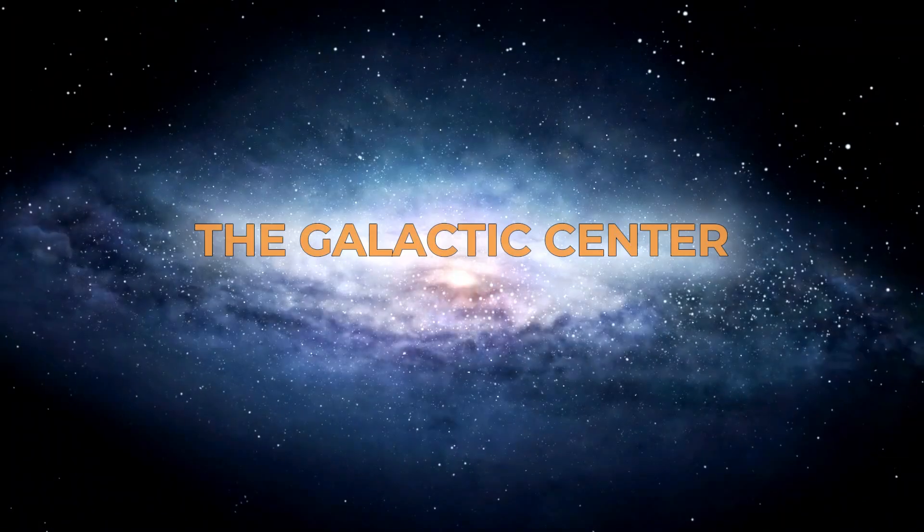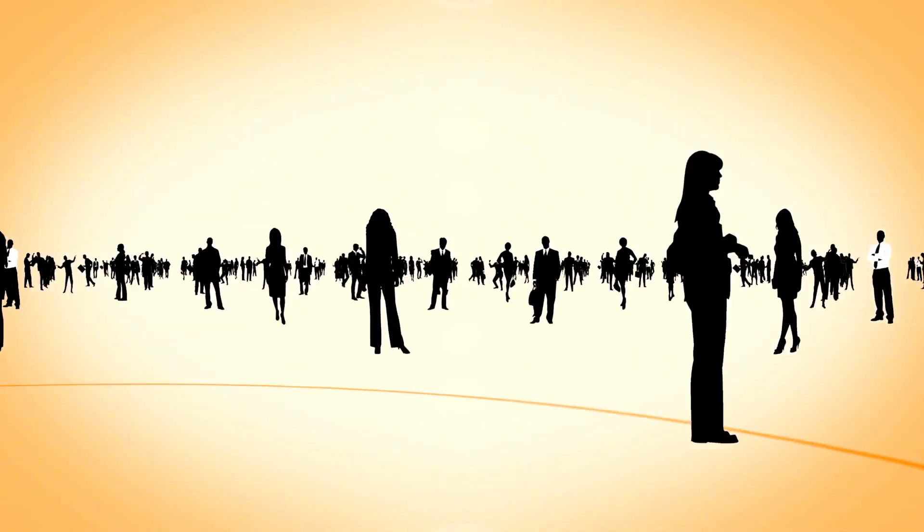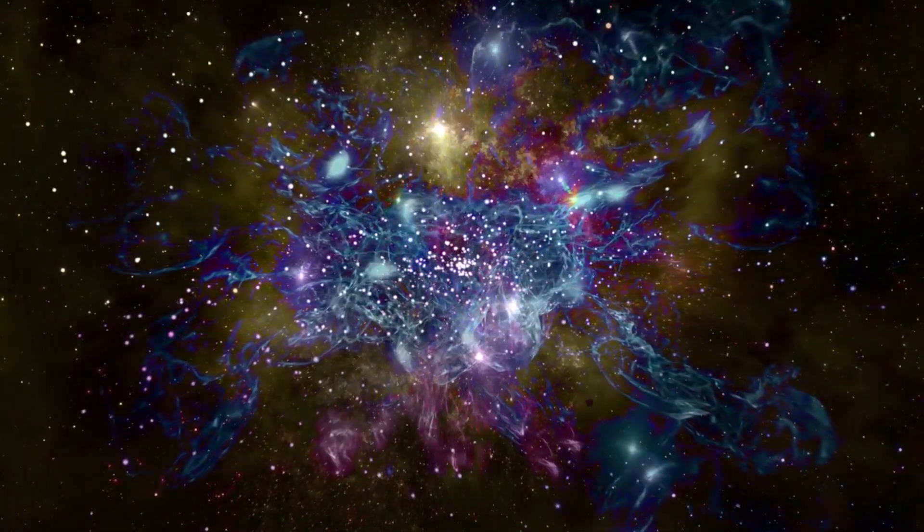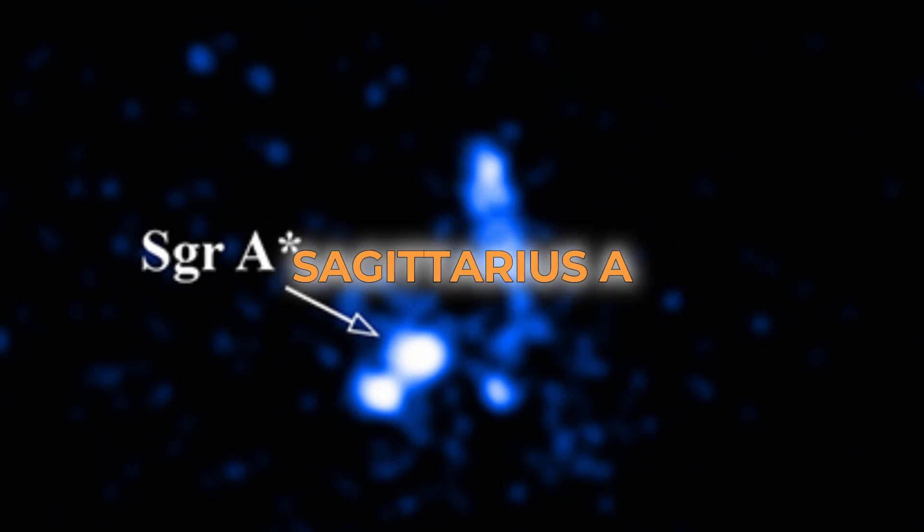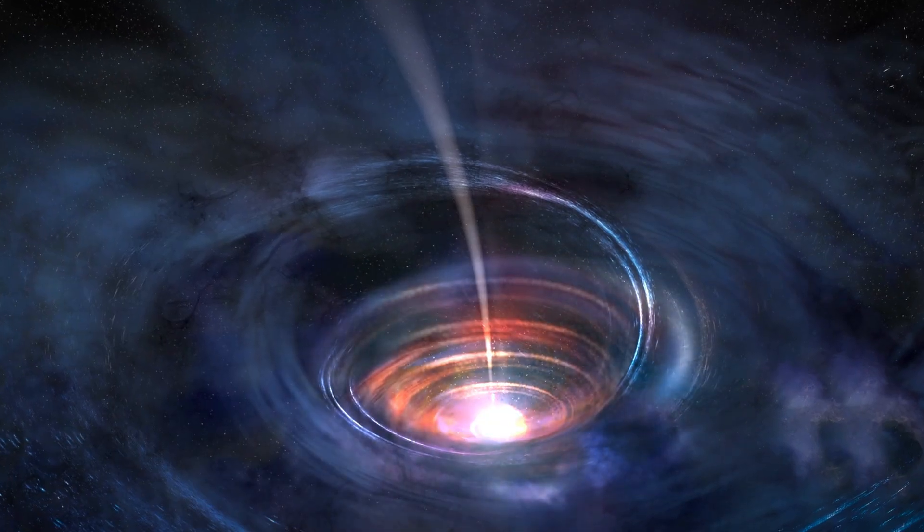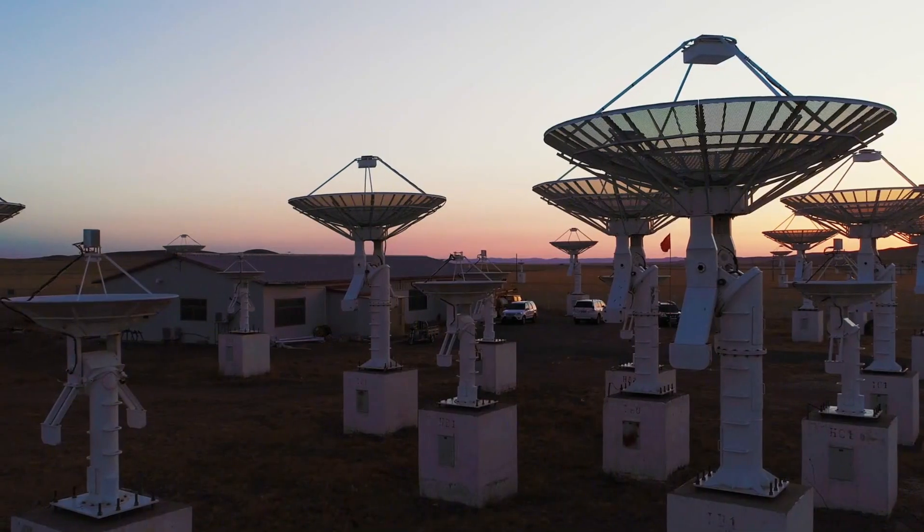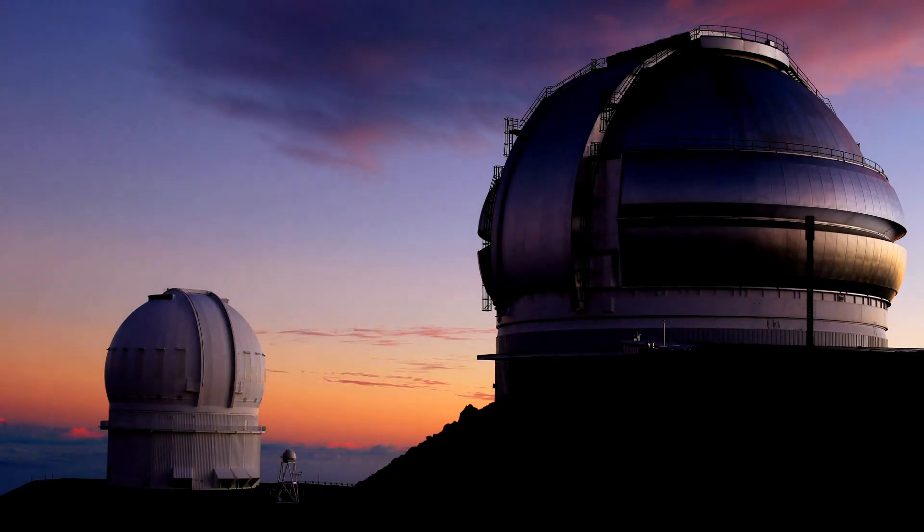The galactic center. Imagine standing amidst the bustling activity of a city square multiplied by billions. Welcome to the heart of our Milky Way galaxy. Here lies Sagittarius A, a supermassive black hole weighing as much as 4 million suns. Beyond theory, astronomers meticulously study it using NASA's advanced space observatories.